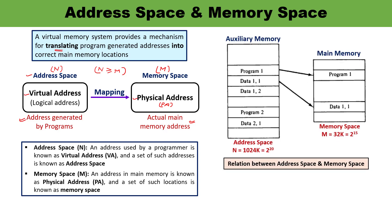Let me explain the relation between address space and memory space. In this diagram, a computer has a main memory capacity of 32K — that is 32 × 1024, which equals 2 raised to the power 15. At the same time, the auxiliary memory stores N = 1024K, which equals 2 raised to the power 20. So the auxiliary memory has a capacity to store information equal to 32 times that of the main memory.